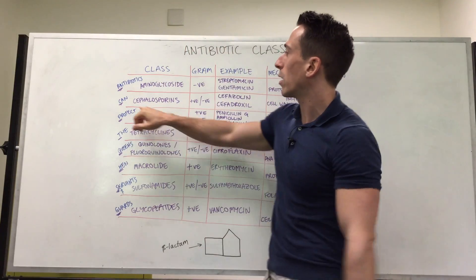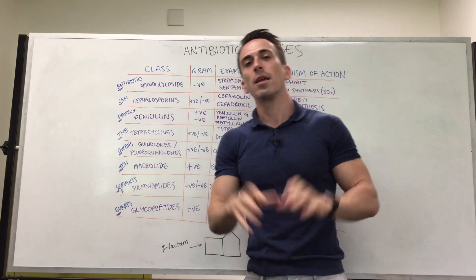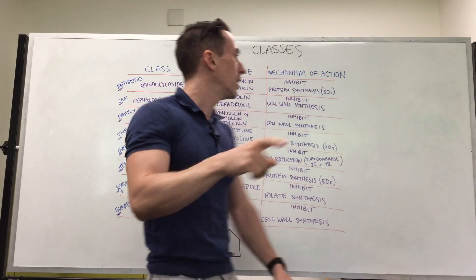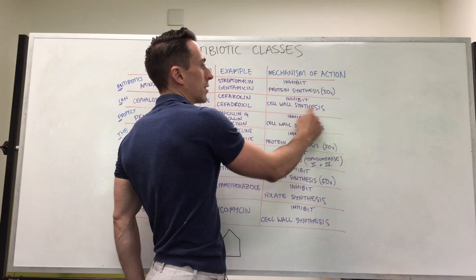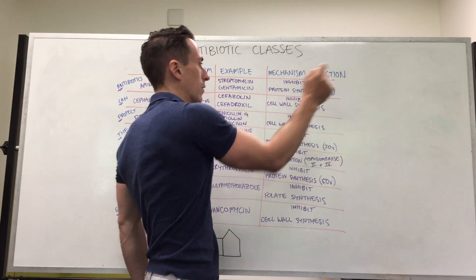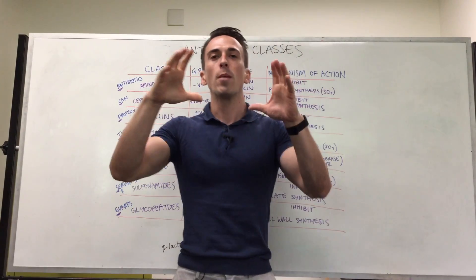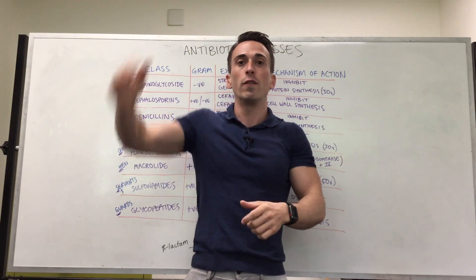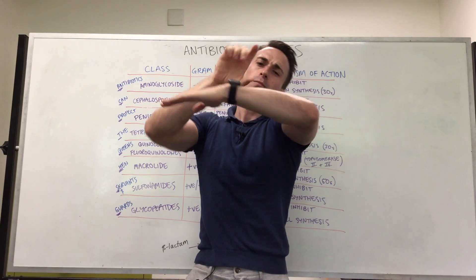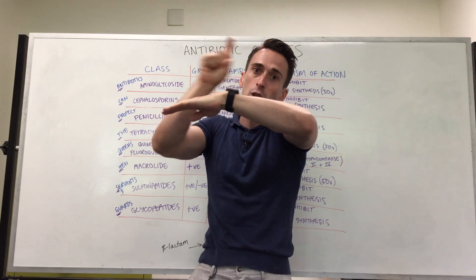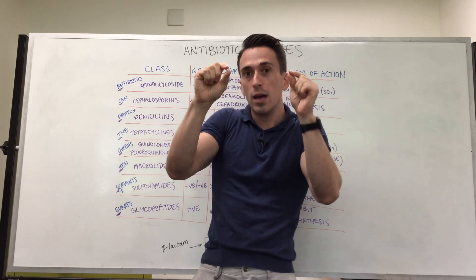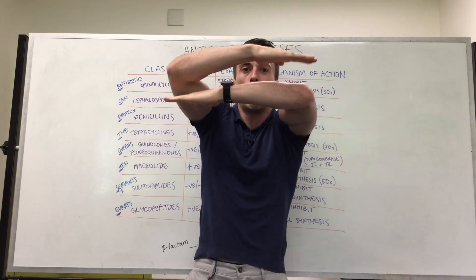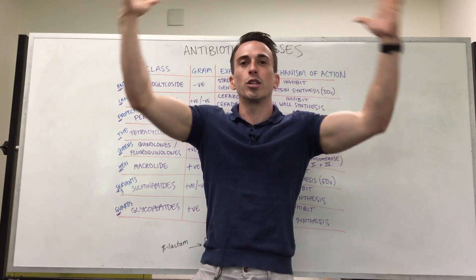Moving on to CAN — the C stands for cephalosporins. They kill off both gram-negative and gram-positive bacteria. Examples are cefazolin and cefadroxil, and they kill bacteria by inhibiting cell wall synthesis. Bacterial cells are surrounded by a cell wall; human cells are not. The cell wall is made up of sugars stacked on top of each other, connected by peptide links. Cephalosporins break the bonds between the proteins that hold the sugar molecules together, causing the cell wall to fall apart.